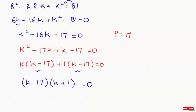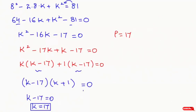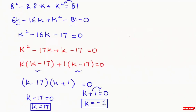Here we have the two common terms (k minus 17). Taking that common: (k minus 17)(k plus 1) equals 0. Now we get two cases: k minus 17 equals 0, so k equals 17; and the other case, k plus 1 equals 0, so k equals negative 1. So here we get k₁ equals 17 and k₂ equals negative 1.